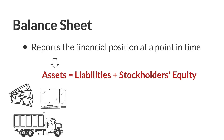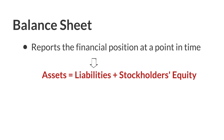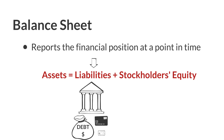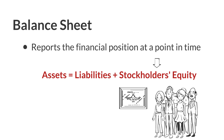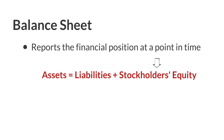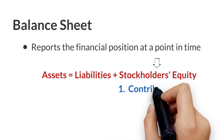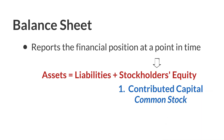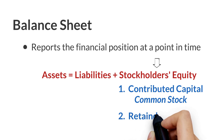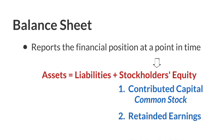Assets are the resources owned by the business. Liabilities and stockholders' equity are the sources of financing for these resources. Liabilities indicate the amount of financing provided by creditors; they are the company's debts or obligations. Stockholders' equity indicates the amount of financing provided by owners as well as reinvested earnings. It is comprised of two parts: contributed capital, such as common stock, which represents the investment from the owners or stockholders, and retained earnings, which is the amount of net income retained in the business.